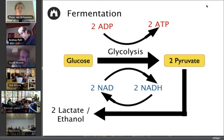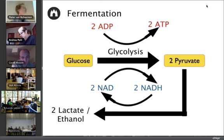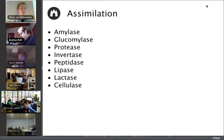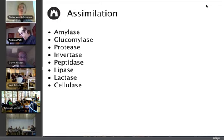Cells don't just need energy — they also need building blocks. That process is called assimilation. Assimilation is basically the process of breaking down nutrients into small building blocks.